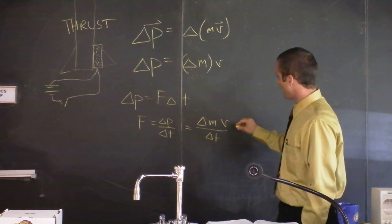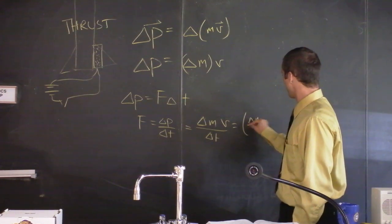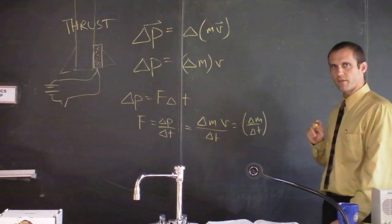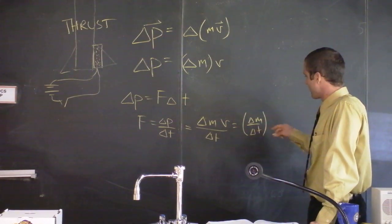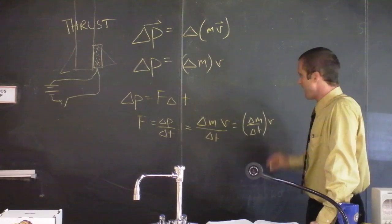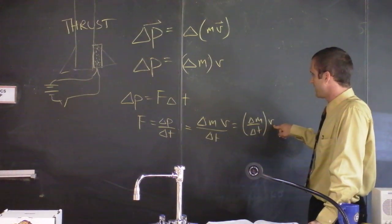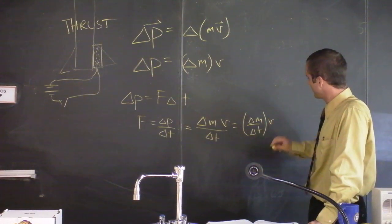Okay, check this out. So I'm going to take out the velocity and say that delta M over delta T, this is a derivative. This is how quickly the mass is leaving the rocket. And so the force on the rocket is the velocity times how quickly the mass leaves the rocket.